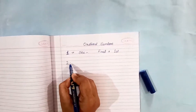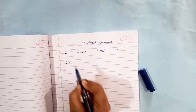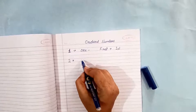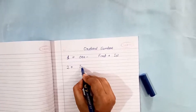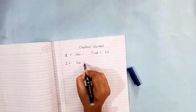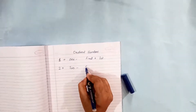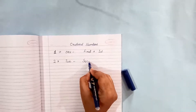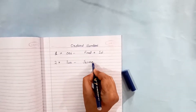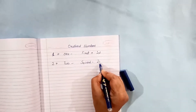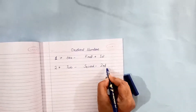Now, this is in normal number or cardinal number. This is number 2. But in ordinal, it is second. S-E-C-O-N-D. Second. 2-N-D.